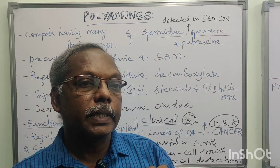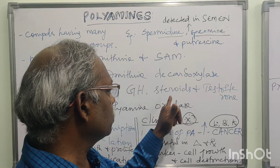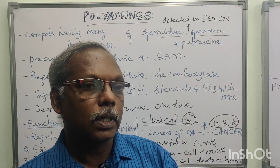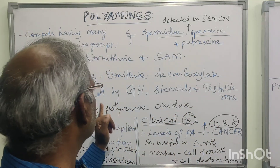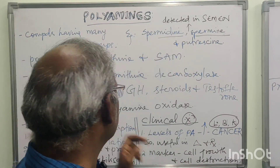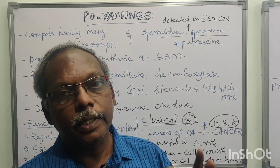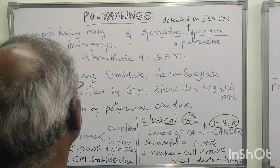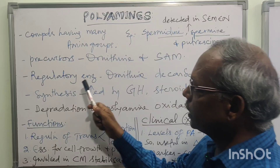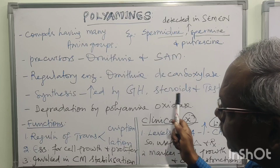Polyamine synthesis is increased under some conditions: growth hormone, steroids, and testosterone. At the time of synthesis of growth hormone, testosterone, and steroids, polyamine synthesis will be increased. Regarding degradation, polyamines are degraded by polyamine oxidase — that is, oxidation of polyamines. So the key points are: definition, precursors, regulatory enzyme, hormones that increase synthesis, and the enzyme for degradation.